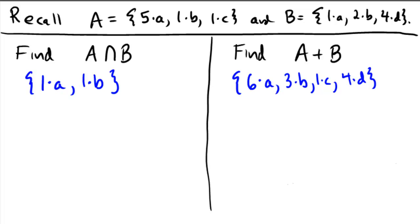So the total, the end multi-set here would be six copies of A, three copies of B, one copy of C, and four copies of D.